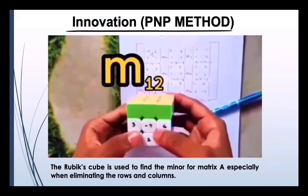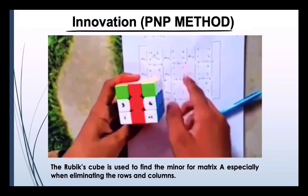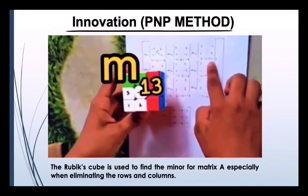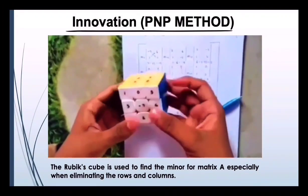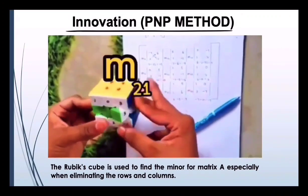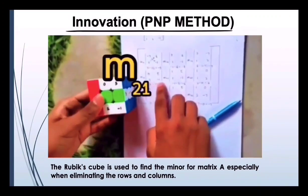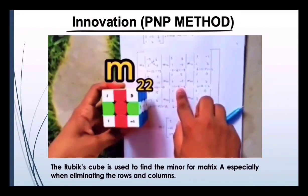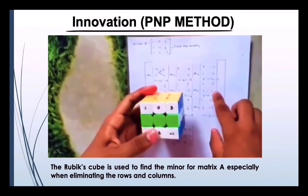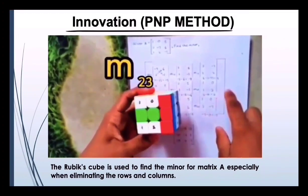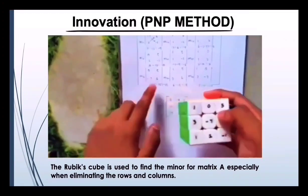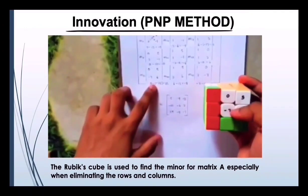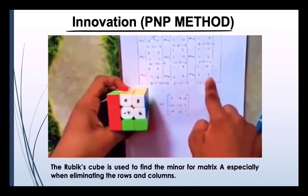For the first row and second column, we got this. For the first row and third column, we got this. And similarly for the second row and first column, we got this. For the second row and second column, we got this. For the second row and third column, and for the third row, the same process applies to all columns.